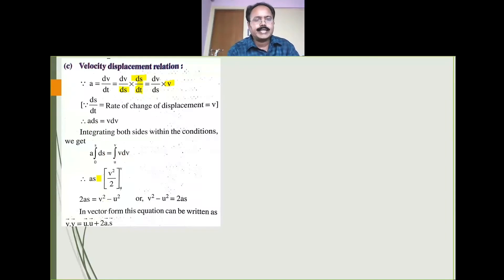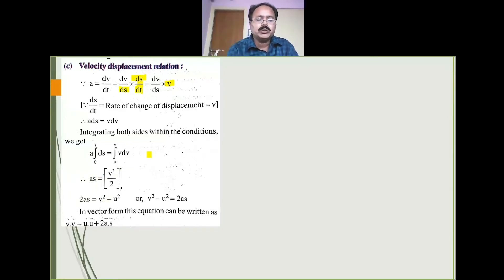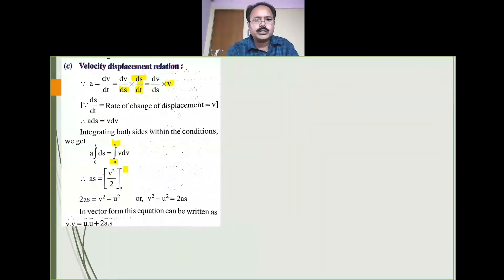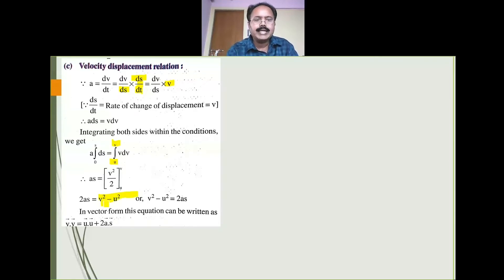So a times s equals the integral of v dv with limits from u to v. The integral of v dv is v square by 2 — just like integral of x dx is x square by 2. Substituting the limits: as equals v square by 2 minus u square by 2. Multiplying both sides by 2: 2as equals v square minus u square. So the third equation of motion is v square minus u square is equal to 2as.